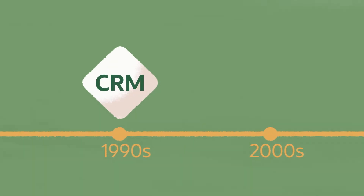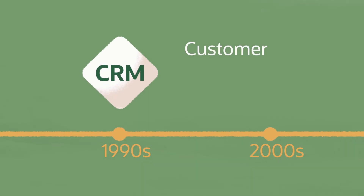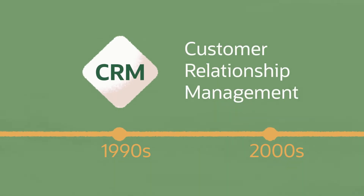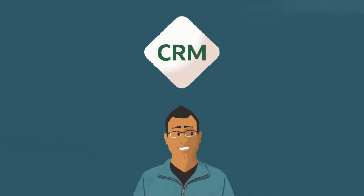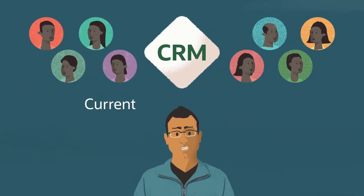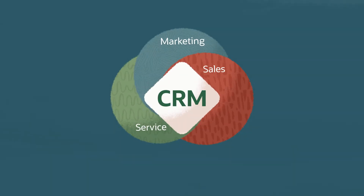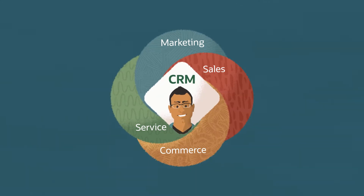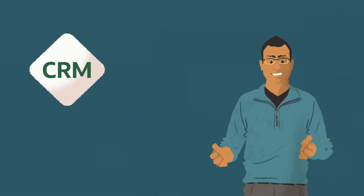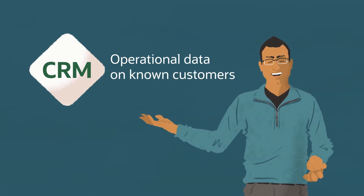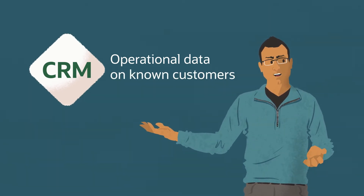I'm going to take you on a quick history tour and give you a whole lot of acronyms. 1990s CRMs — customer relationship management software was introduced in the 1990s, allowing companies to manage their interactions with both current and potential customers. It started with sales, then came service, then marketing, then everyone acquired commerce technology, so now it's really become a complete customer journey. But primarily it works with operational data on known customers, and it does what it's built to do.